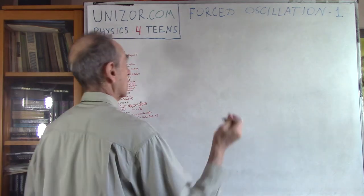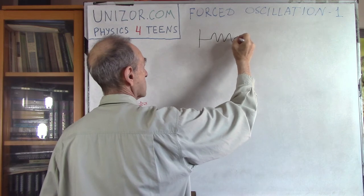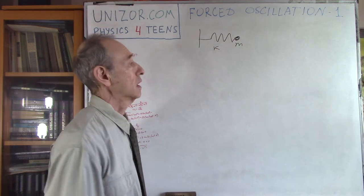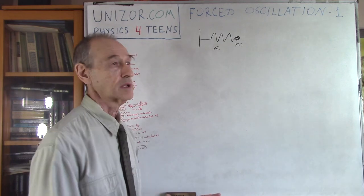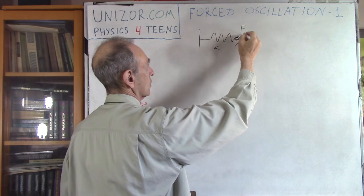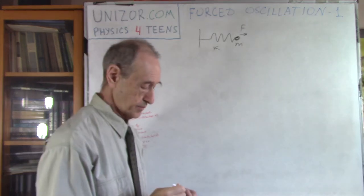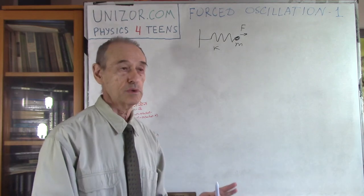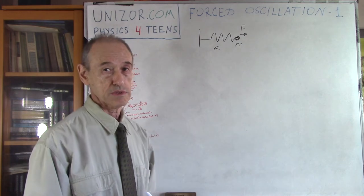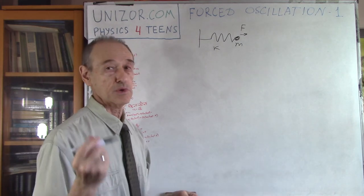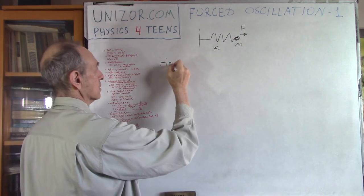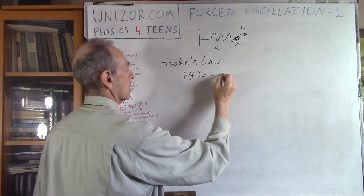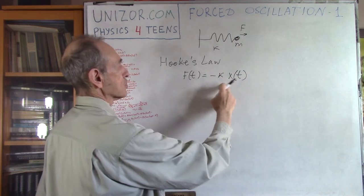We are talking about a spring with an object of mass M. The spring has elasticity K. We will be talking about a certain external force F which is applied to this object. First, let's remind you what exactly happens if there is no external force. If there is no external force, there is only one force acting: Hooke's law.